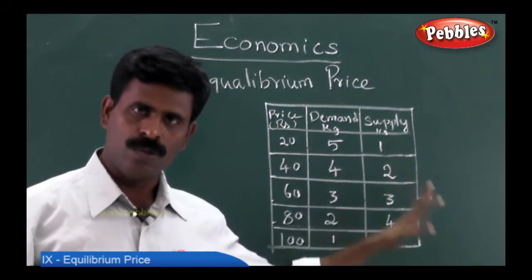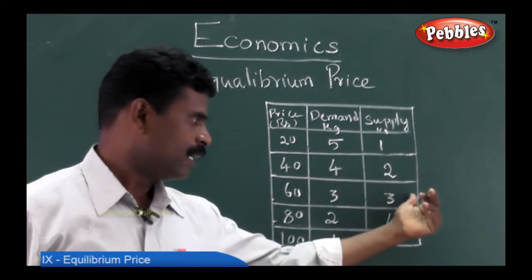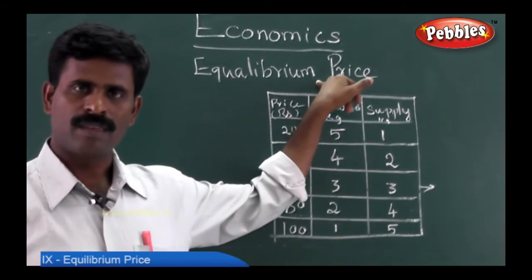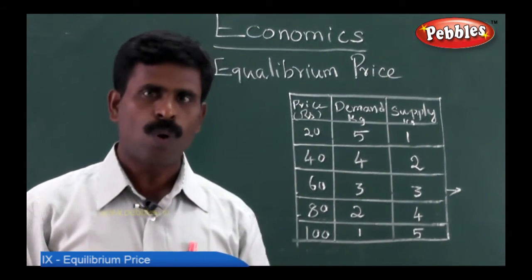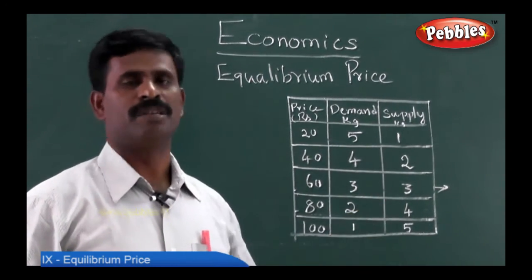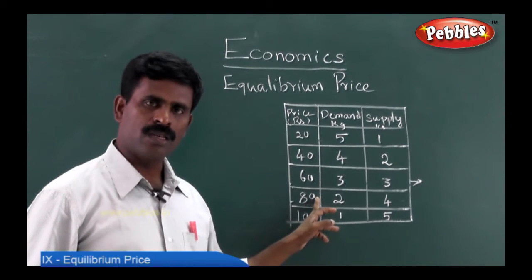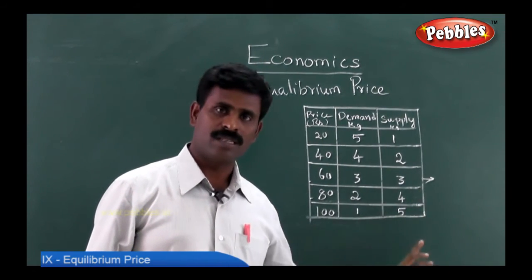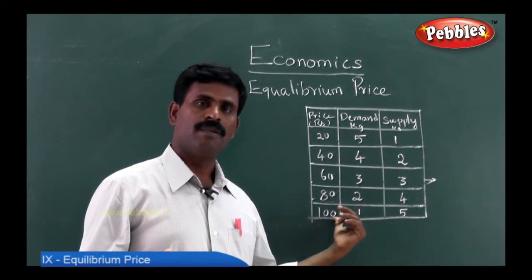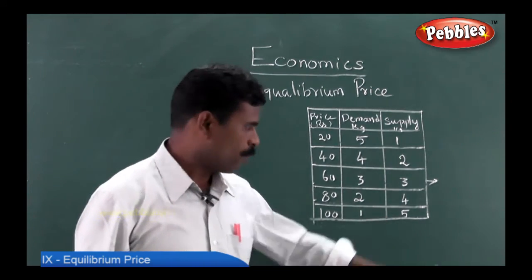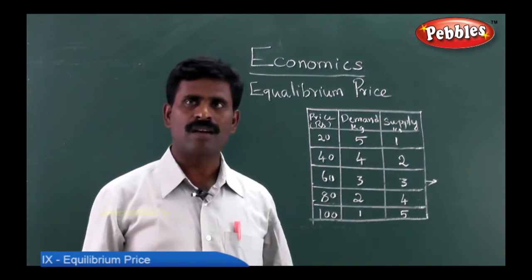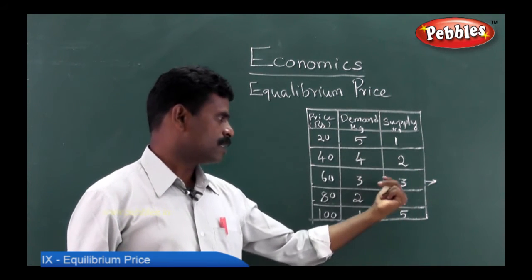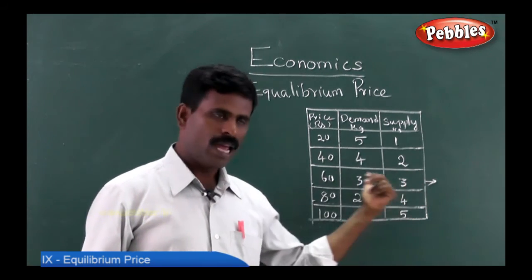The supplier is also ready to supply only 3 kgs. Where the buyer and the seller — the consumer and the producer — come to the same point, that is called the equilibrium price. When they come to a compromising position without sacrificing each other's benefits, we call it the equilibrium price. If the price is high at rupees 80, the consumer will buy only 2 kgs and the supplier wants to sell 4 kgs. When the price is rupees 100, the buyer will go for only 1 kg while the supplier is giving 5 kgs — the demand and supply will not go together. But at 3 kgs supplied and 3 kgs demanded, that is called equilibrium price.